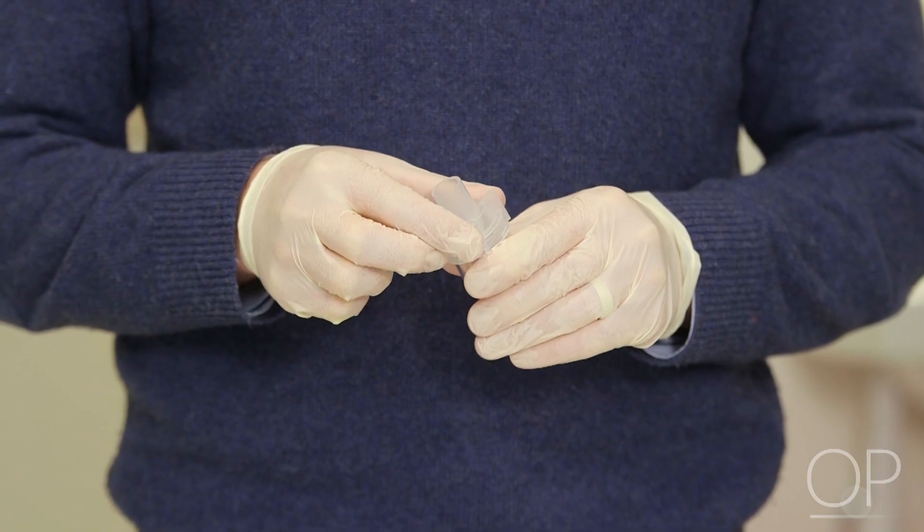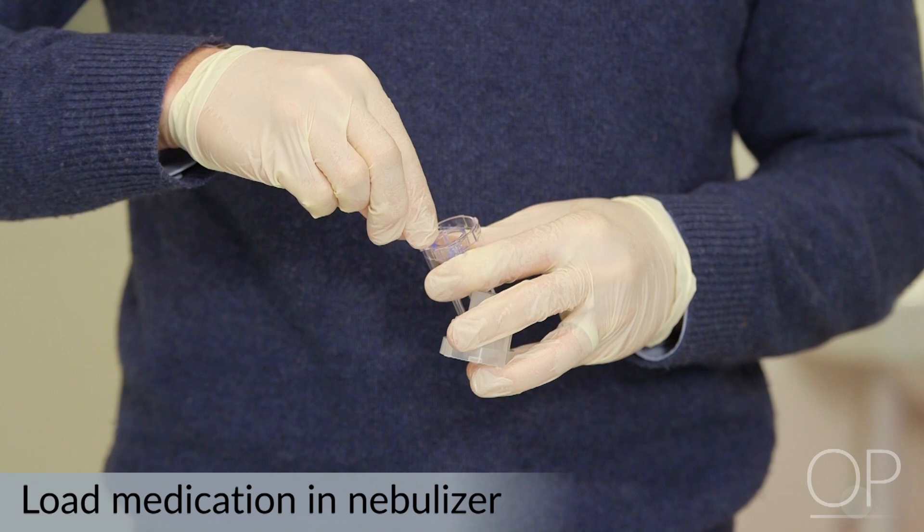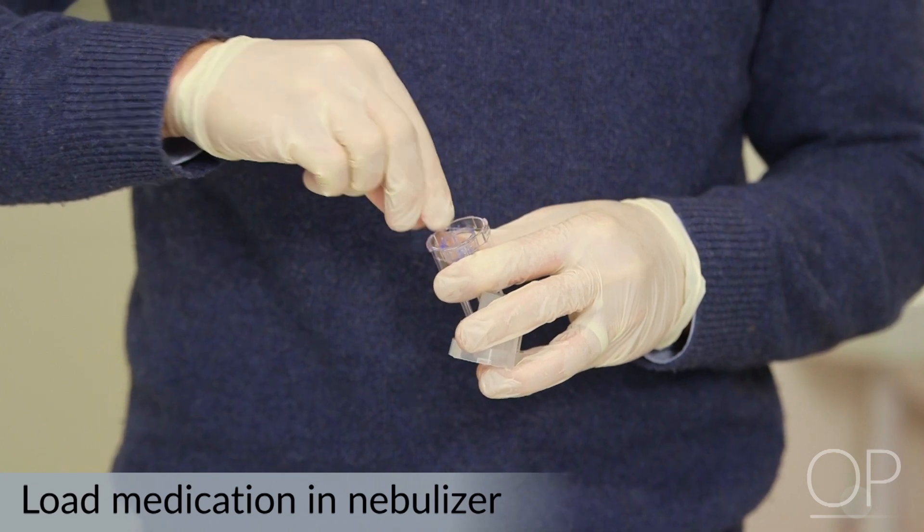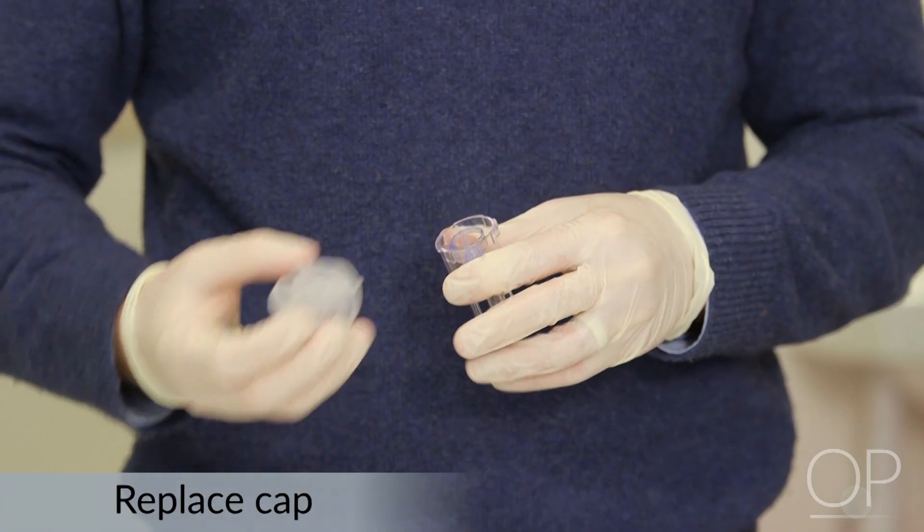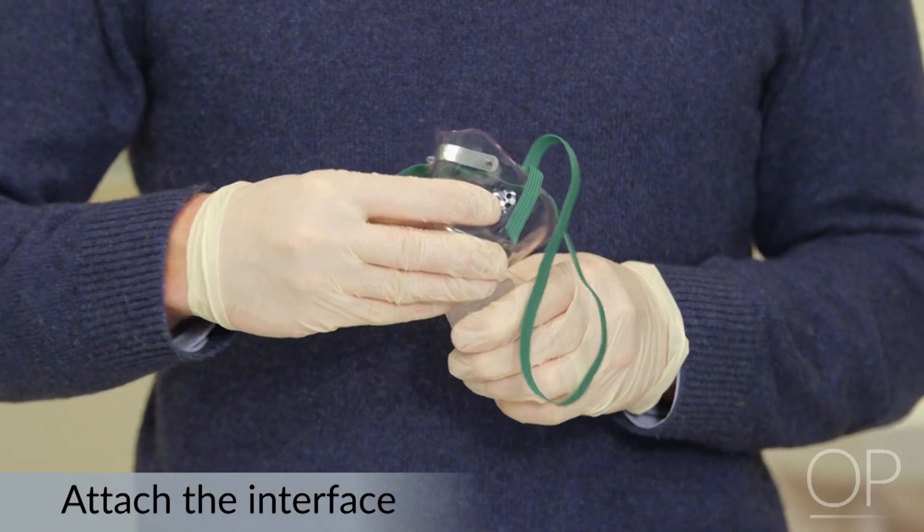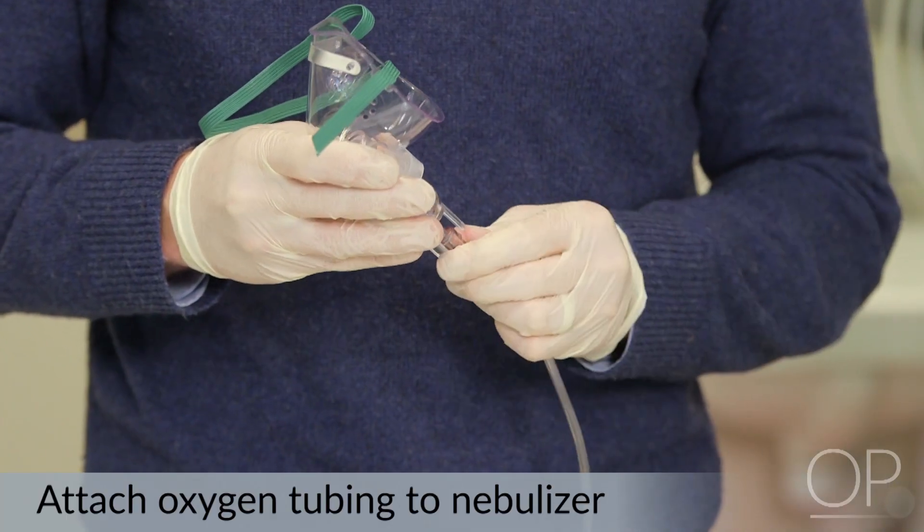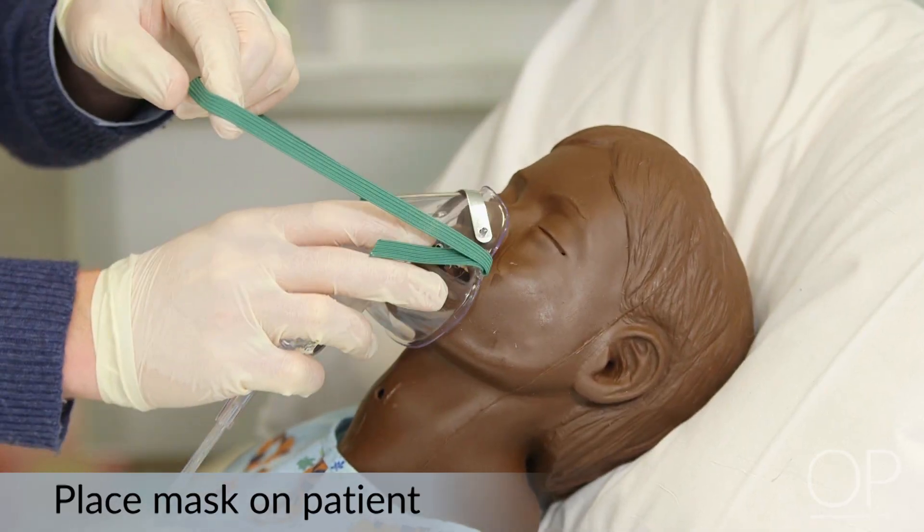Next, I have our drug. I've removed the cap and I'm going to take our medication, which is in a liquid suspension, and place it inside the device. We're going to replace the cap, attach the interface, affix the oxygen tubing to the bottom portion of the nebulizer, and place the mask on our patient.